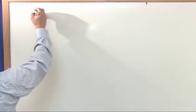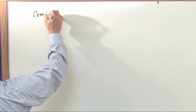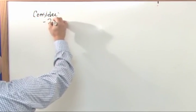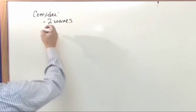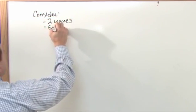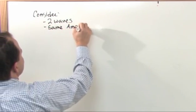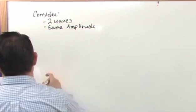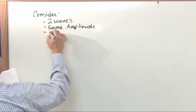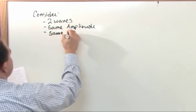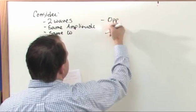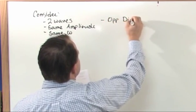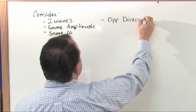Let's consider two waves. So we're going to consider two waves, just like last section, same amplitude, same omega, which is the frequency. We're going to consider them going in opposite, that's what the OPP means, directions.